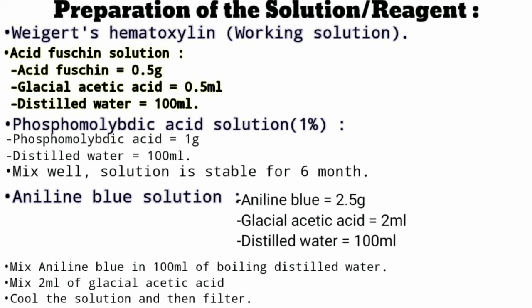Third is phosphomolybdic acid 1% solution. To prepare it, we need phosphomolybdic acid 1 gram and distilled water 100 ml. Mix both together. This solution is stable for 6 months.